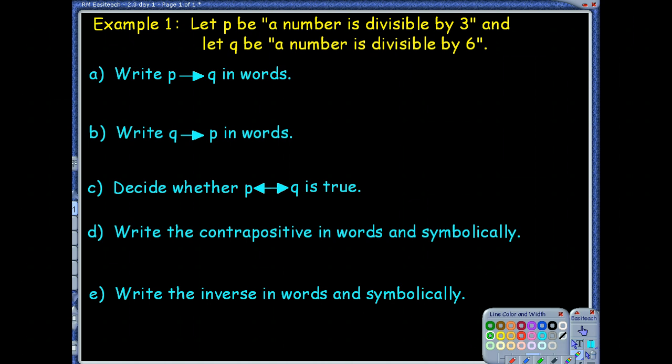So what we're going to do is we have five different things they're asking us to do. The first thing it says, write P, and again, this means implies Q in words. So what does that mean we're writing? We're writing the conditional statement.